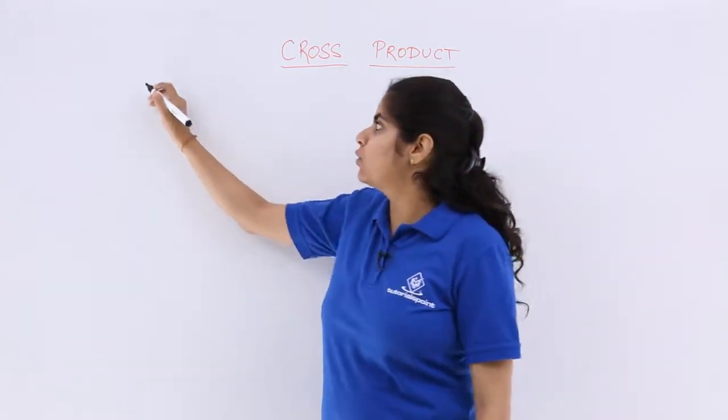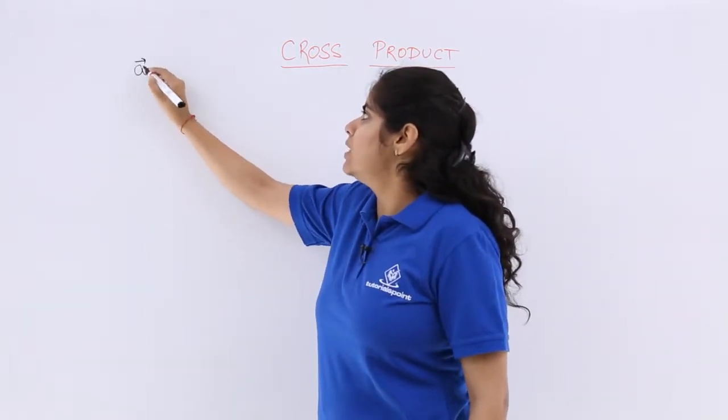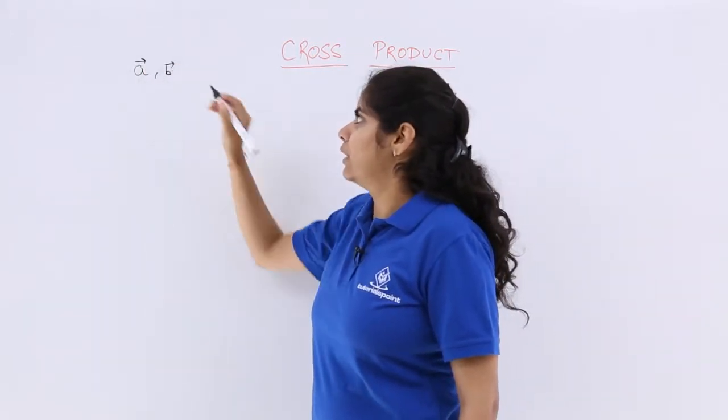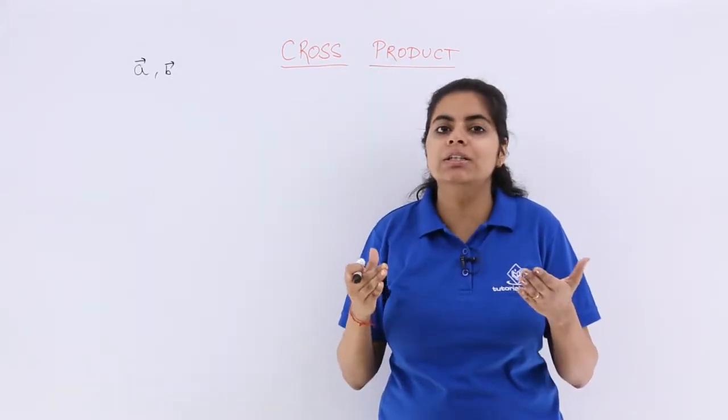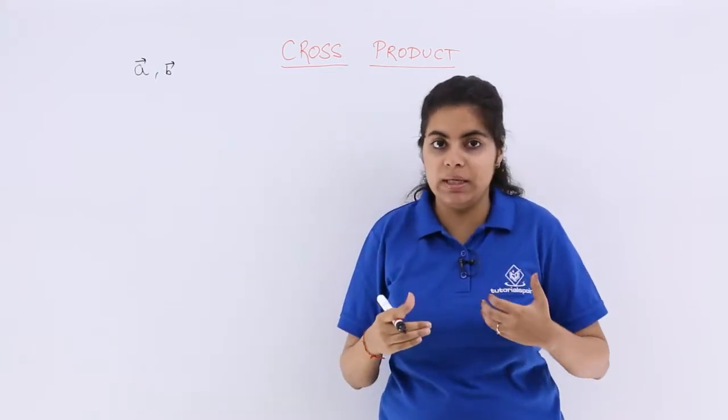Suppose we have two non-zero vectors, these are a vector and b vector. Now these vectors, if I have to form a scalar product, then it would be a dot b.